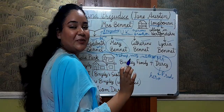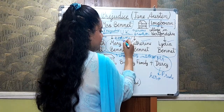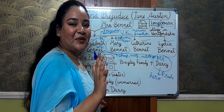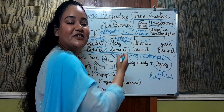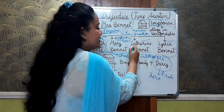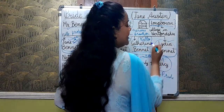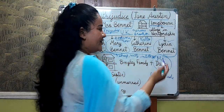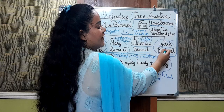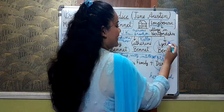Mary Bennet doesn't appear very often in the novel, but you should remember that she is a bookworm and a nerd. Since she reads so many books, she tends to give unsolicited advice and constantly showcases her knowledge to everyone. Catherine Bennet is a relatively less important character — you just need to be acquainted with her name. Her pet name is Kitty. Lydia Bennet is the youngest of all the Bennet sisters and is quite spoiled. She is the favourite of Mrs. Bennet, while Elizabeth Bennet is the favourite of Mr. Bennet.